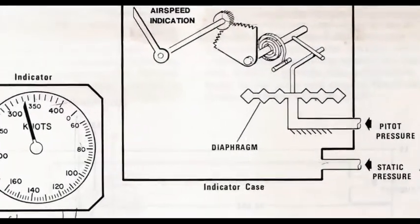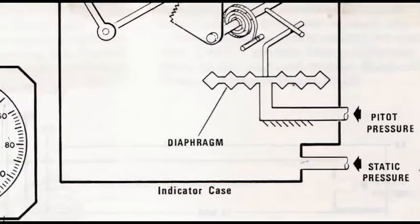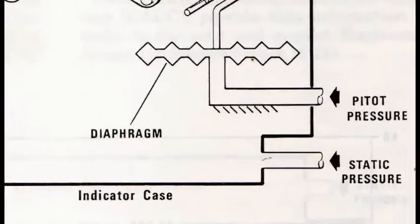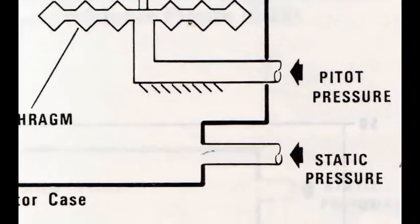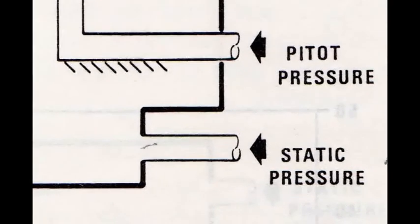Remember, airspeed requires two inputs, pitot and static pressure. If the test set is not connected to the static side, the technician must know how to modify the output of the test set in order to get an accurate reading.